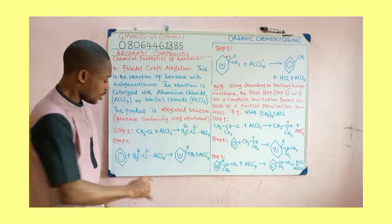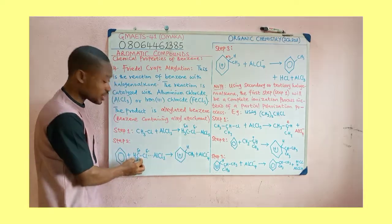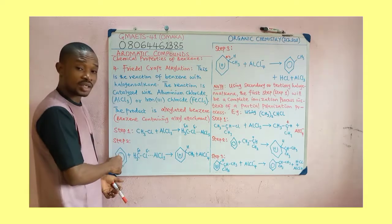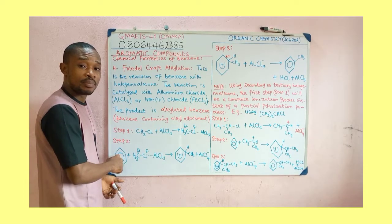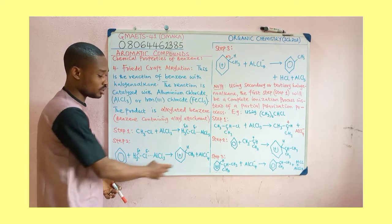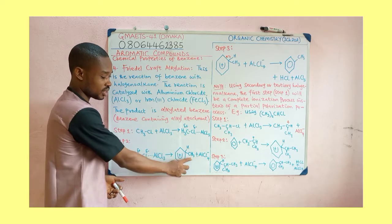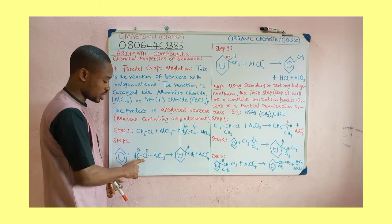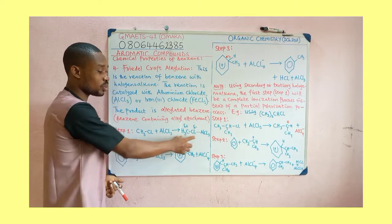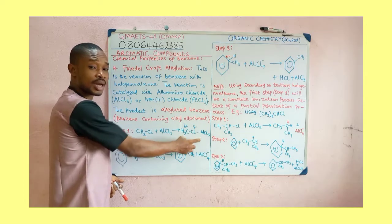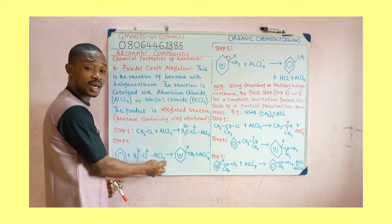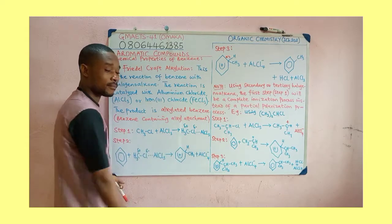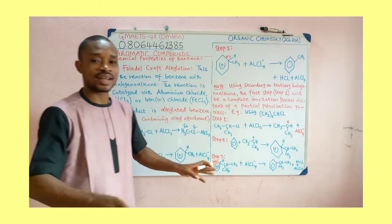Every other thing follows the same process. The partial positive part of this complex will be transferred to the benzene ring, breaking one of the double bonds. Then chlorine, which is partially negative in that polarized compound, will be transferred to the catalyst to give us AlCl4 minus.